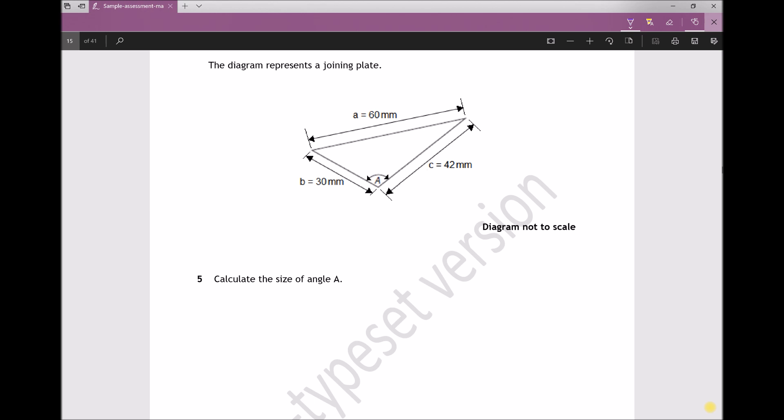From what we know about the sine and cosine rule, we can only use the sine rule when we know at least one angle. Here we have a non-right angle triangle but we don't know any of the angles.